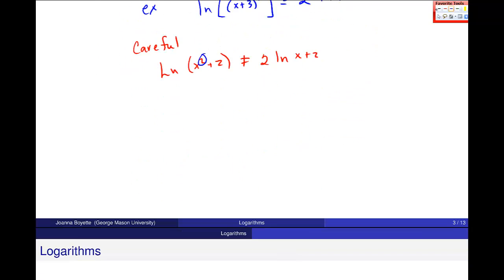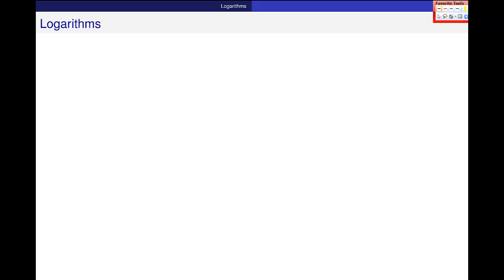So finally, let's say the sixth property is what I would call the inverse property. And that is that the natural log of e to the x power is just x.